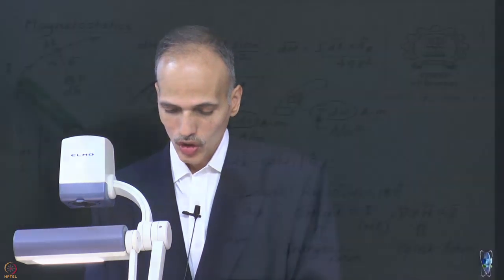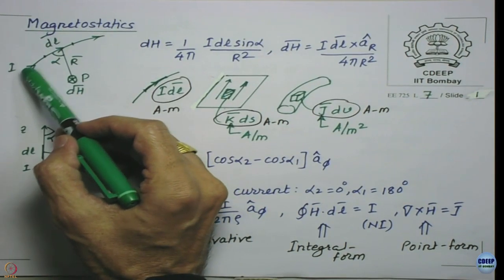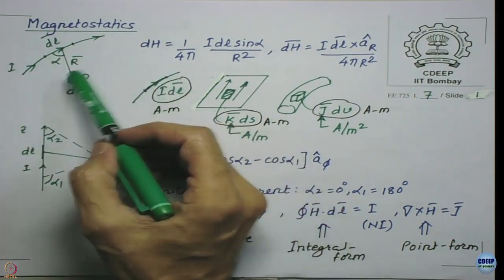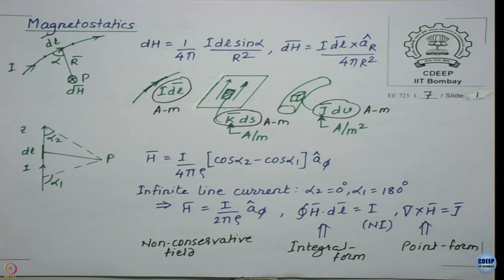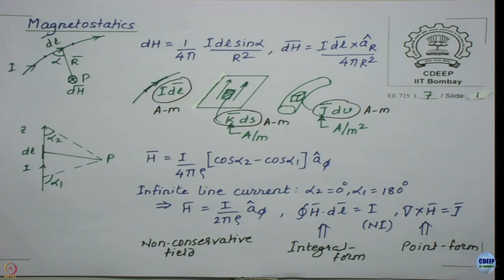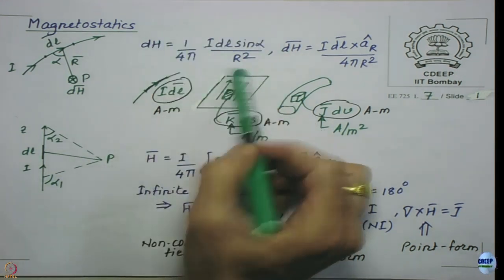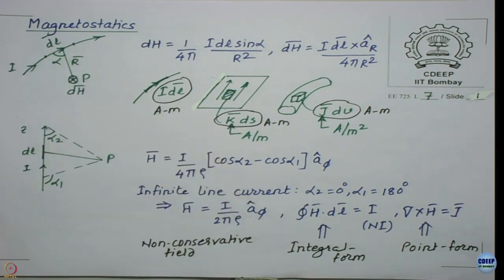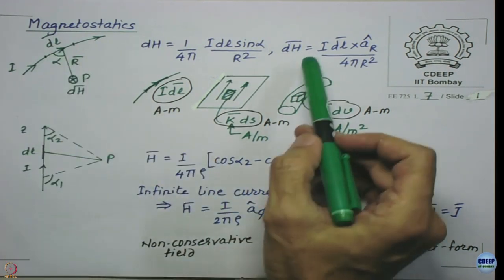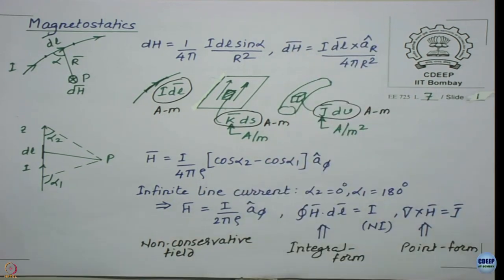When we talk of magnetostatics, we start with the Biot-Savart law. For a line carrying current I, the value of magnetic field intensity dH at point P at a distance R is given by this formula, with alpha as the angle as shown. In vector notation it becomes this formula. This is the well-known Biot-Savart law.